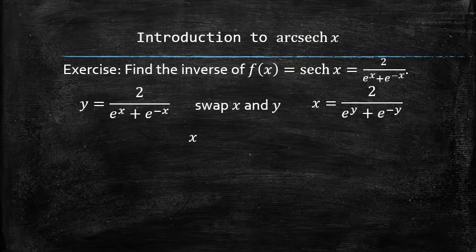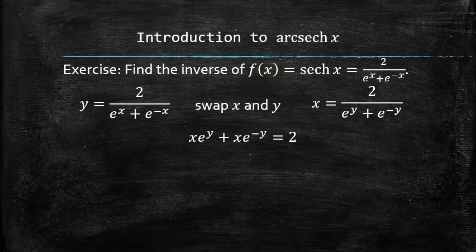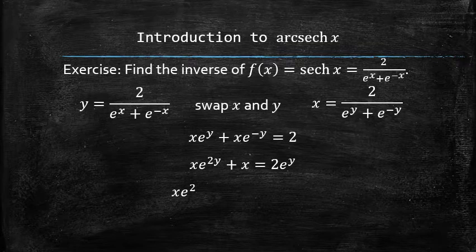We multiply both sides by the denominator and distribute. Then we multiply both sides by e to the power y and collect all the terms on the left side.